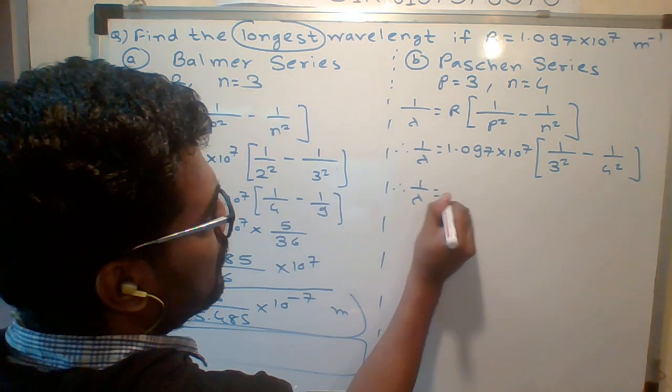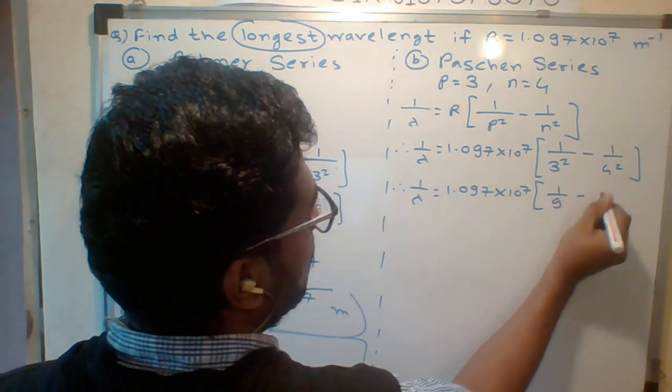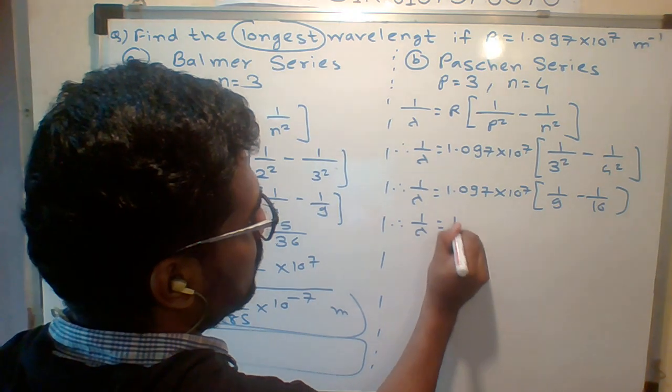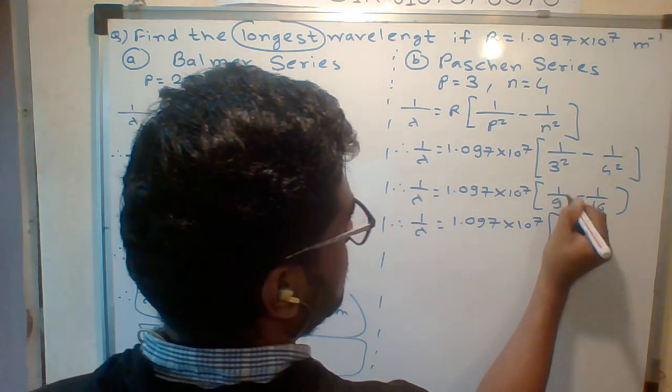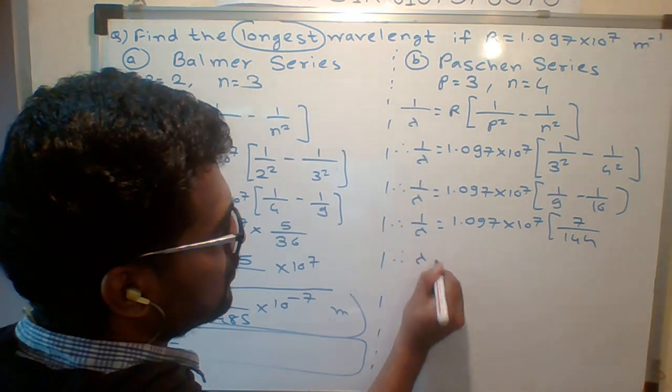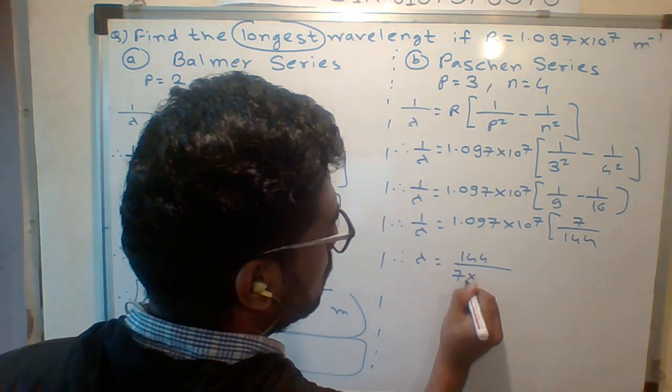1/λ = 1.097×10⁷(1/9 - 1/16). The final answer will be 1.097×10⁷...